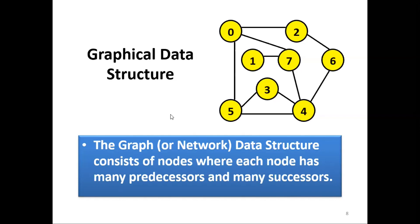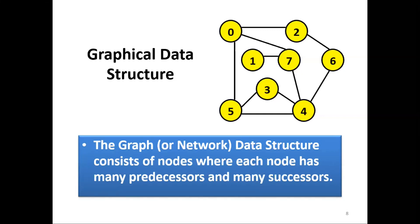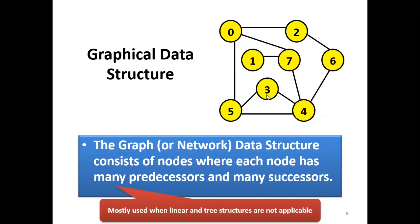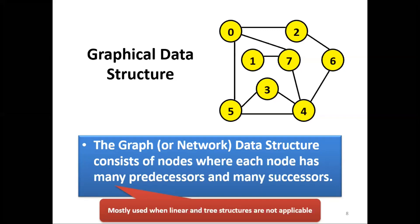That is one of the reasons why the graphical data structure is introduced. A graphical data structure is a kind of graph that consists of nodes and edges. The nodes can have many predecessors and many successors. Nodes are like the values five, three, four — they are all nodes — and the edges are the lines that connect them. This kind of graph is required to perform some operations that linear and tree data structures are not capable of performing.